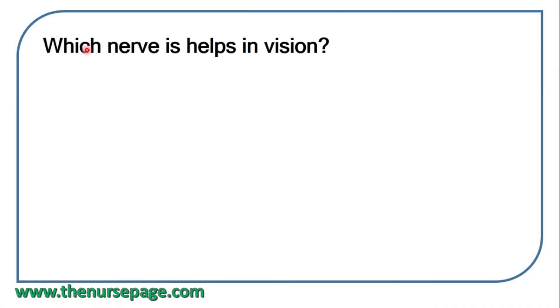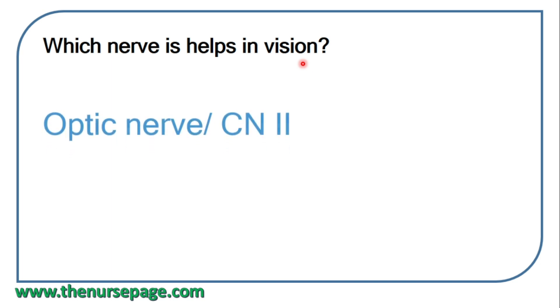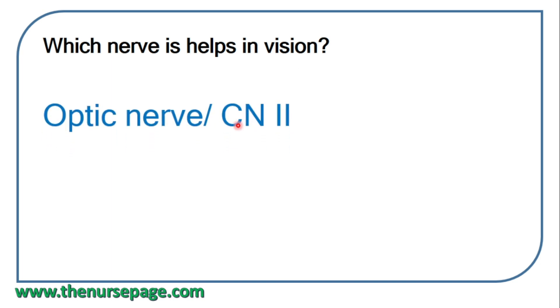Next question: which nerve helps in vision? That is an easy question — the optic nerve, which is cranial nerve 2, helps in vision.